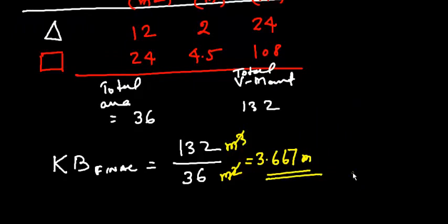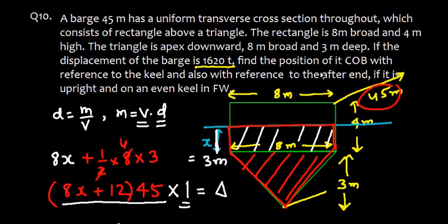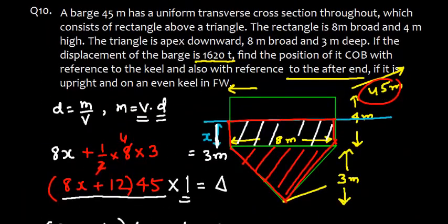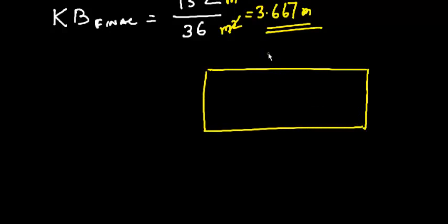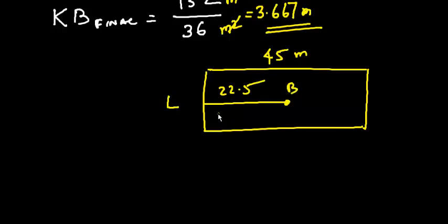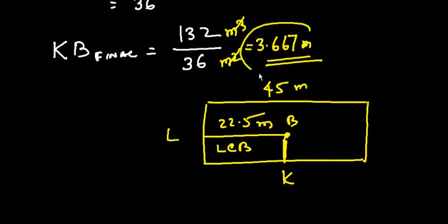So KB = 3.667 meters — that is the first part of the answer. For the second part, we need the LCB with reference to the after end. Since the barge has a uniform cross-section along its entire 45-meter length, the geometrical center longitudinally is at 45 ÷ 2 = 22.5 meters. Therefore, LCB = 22.5 meters from the after end, and KB = 3.667 meters.